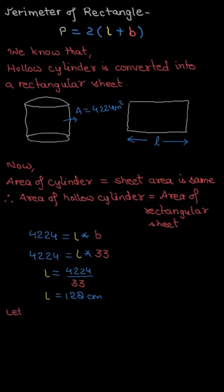This represents the length. We need the perimeter, so finding perimeter using the formula 2 into L plus B, substituting 128 for L and 33 for B.